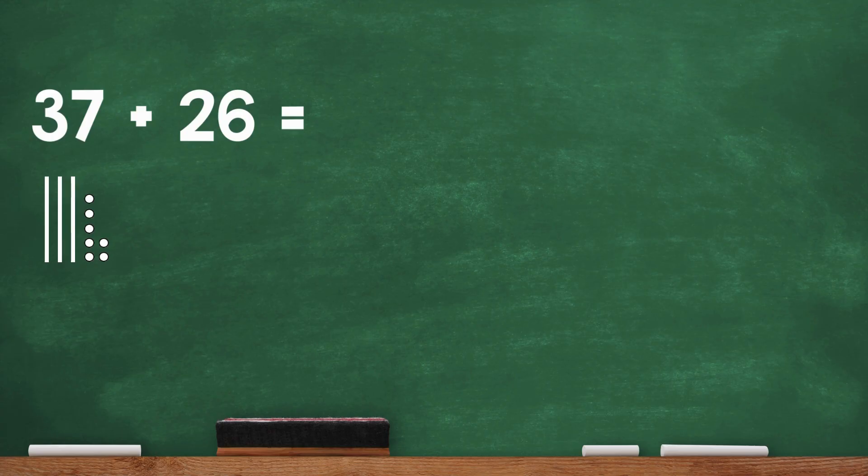Now let's draw 26. That's 2 tens and 6 ones. First, let's add the ones. We have 7 ones and 6 ones. How many ones is that?